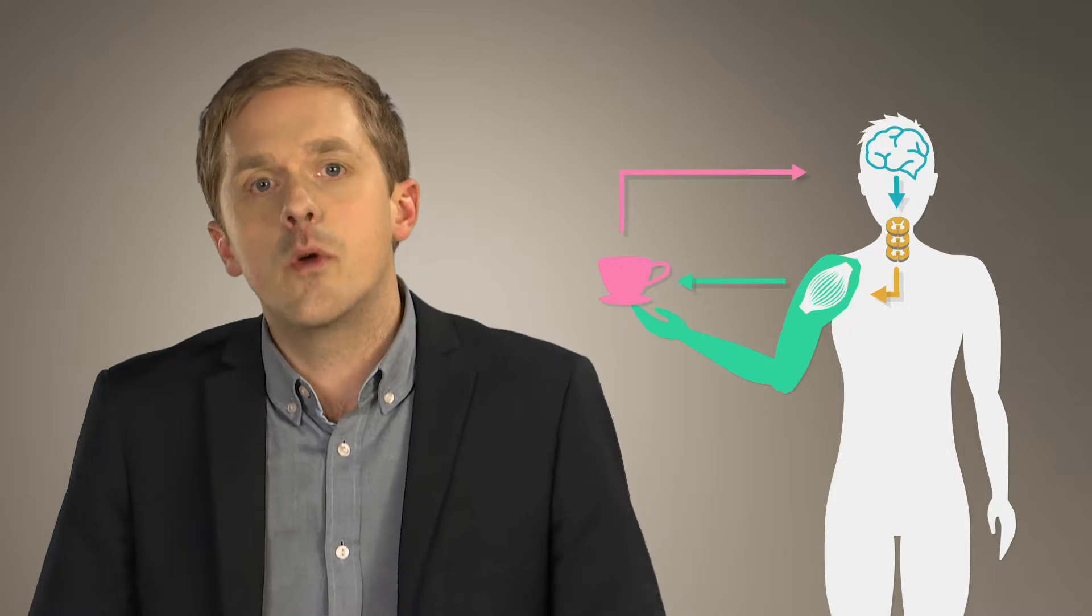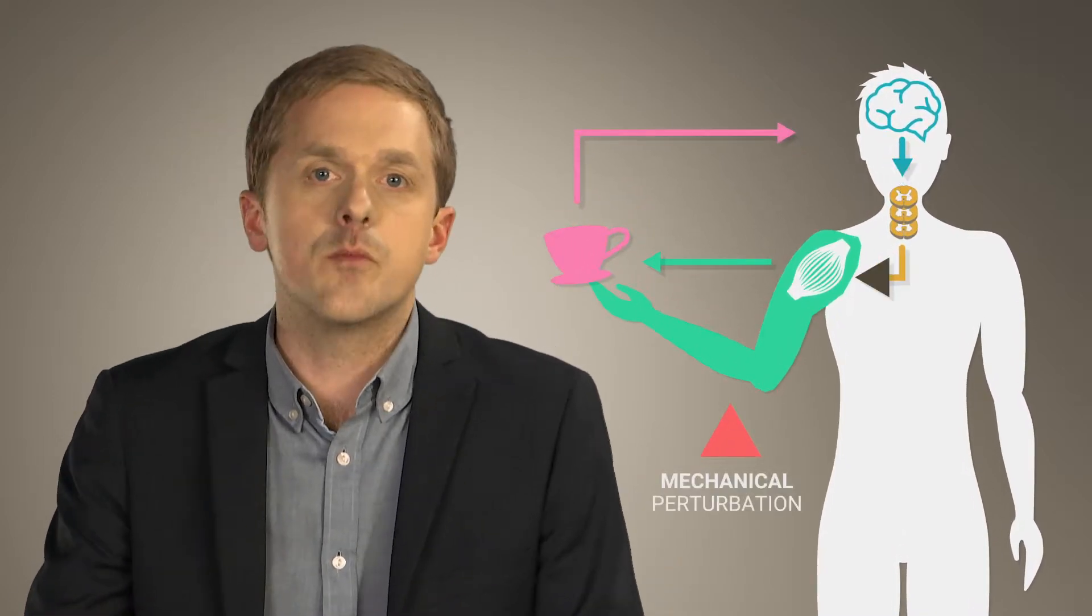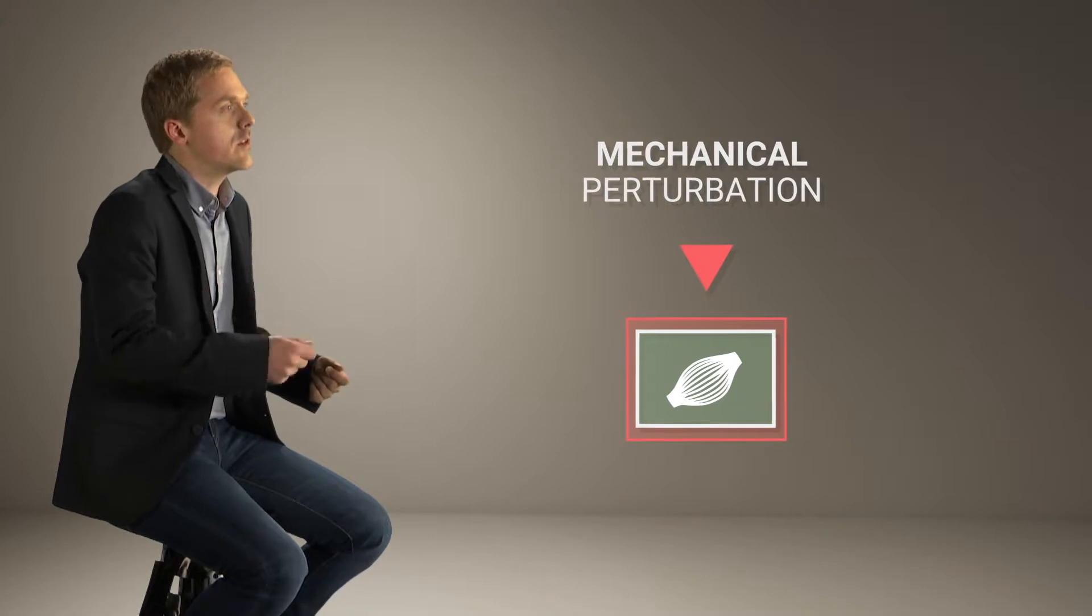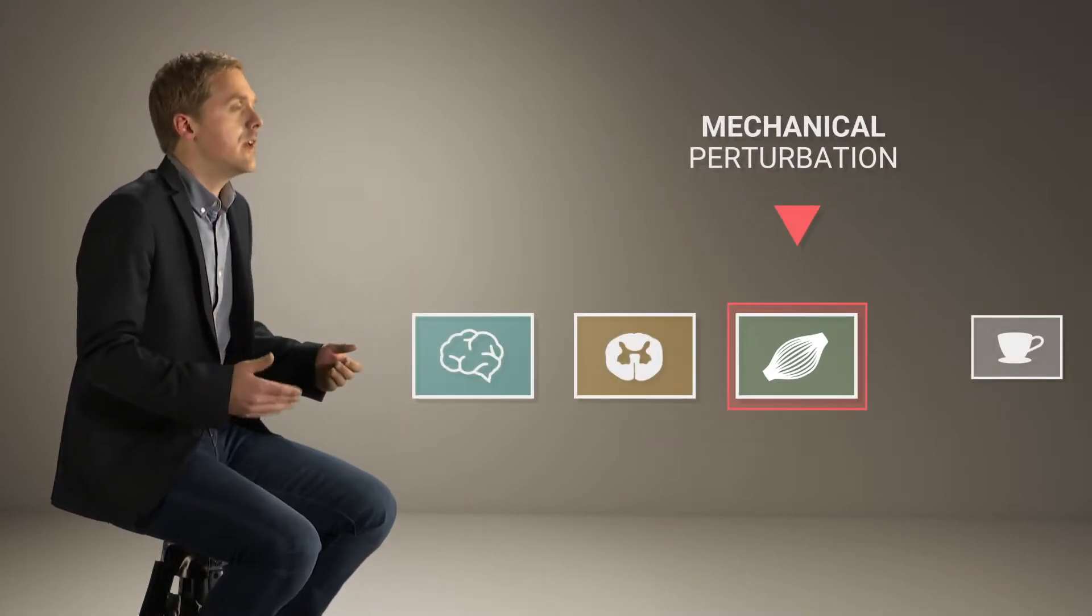Thus, in the lab, we apply perturbations to the environment or to the limb and measure corrective movements following these perturbations. Mechanical perturbations play a central role in my research because they generate a very particular series of events. The first one is a stretch reflex.